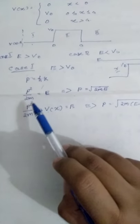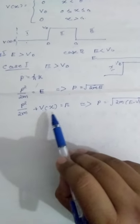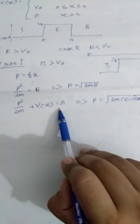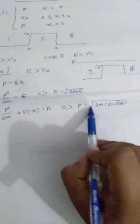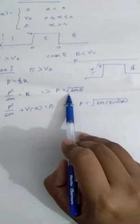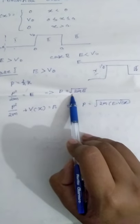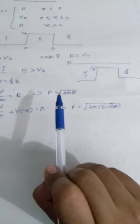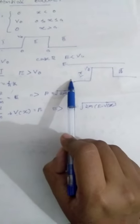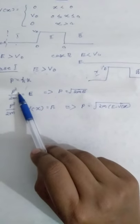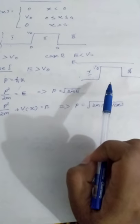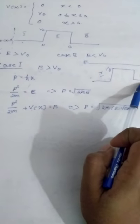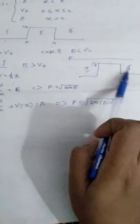The basic equation is P squared over 2m plus V(x) equals E — kinetic energy plus potential energy equals total energy. From that, P equals root of 2m times (E minus V(x)). Substituting V(x) equals 0, we get P equals root of 2mE. In region 1 and region 3, potential energy is 0, so kinetic energy equals total energy, giving P equals root of 2mE.